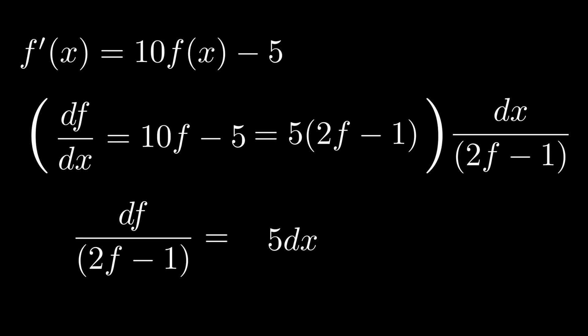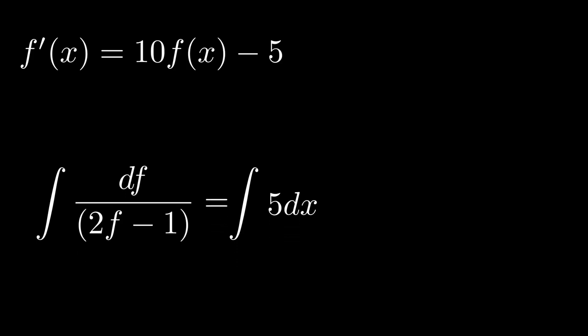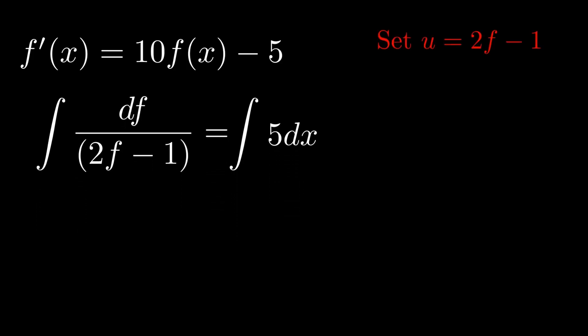Now you might be a little bit unsure how to integrate the left hand side. So what we're going to do is solve it using u substitution and we'll get it into a more familiar format. We're going to begin by setting u to be equal to 2f minus 1. Differentiating both sides we get du is equal to 2df. Now dividing both sides by 2 we get du divided by 2 is equal to df.